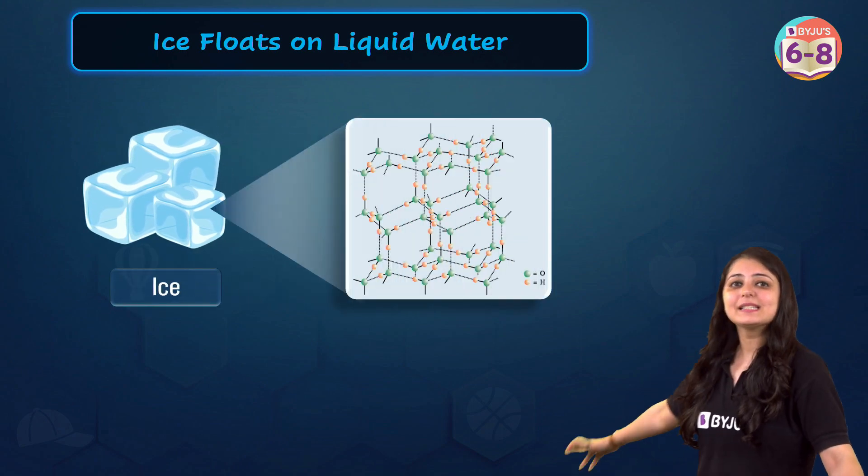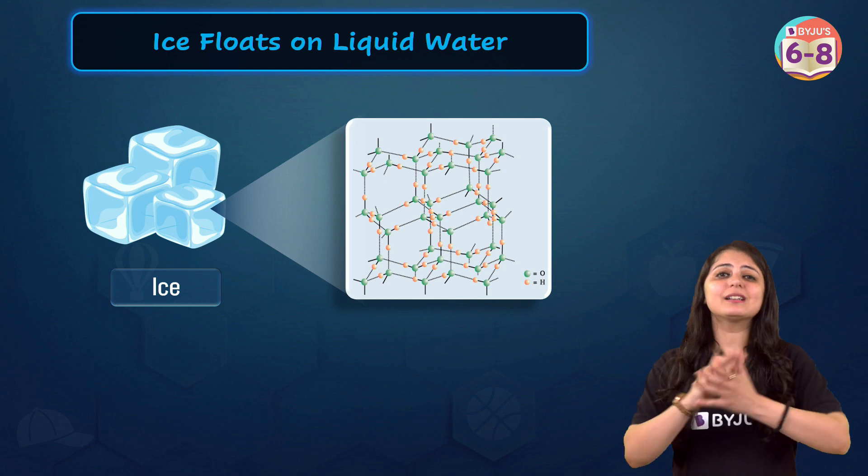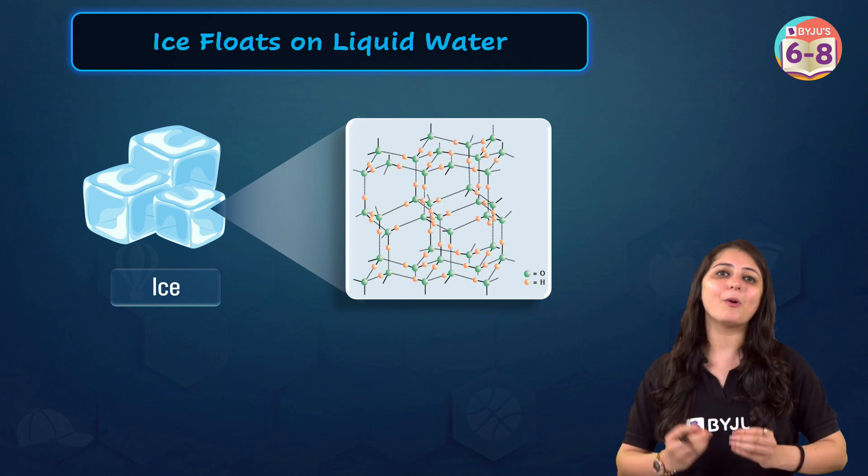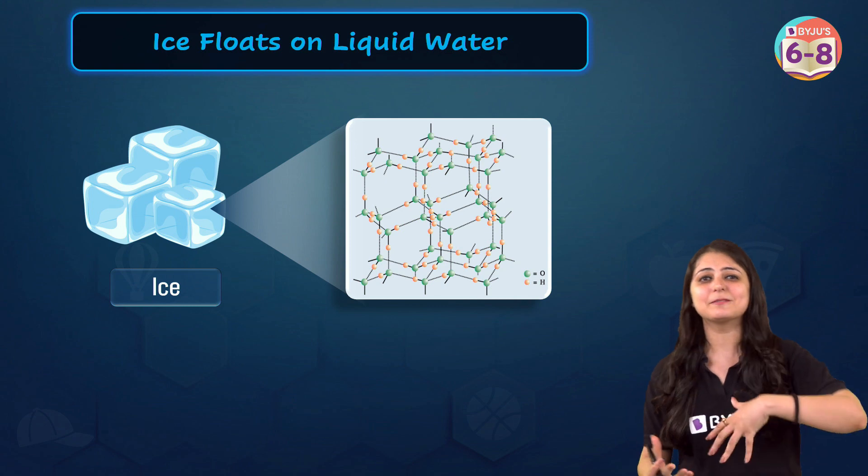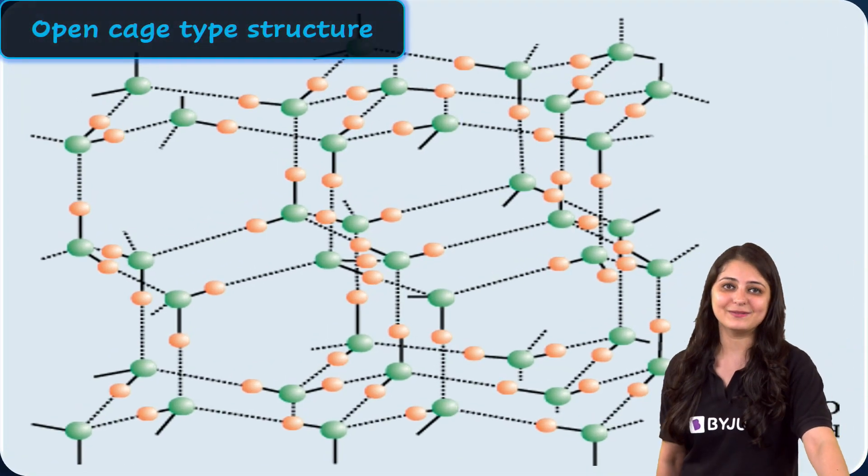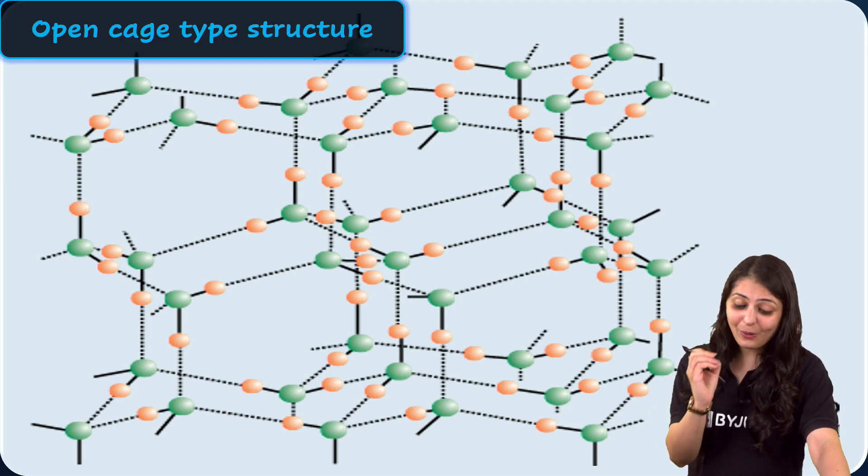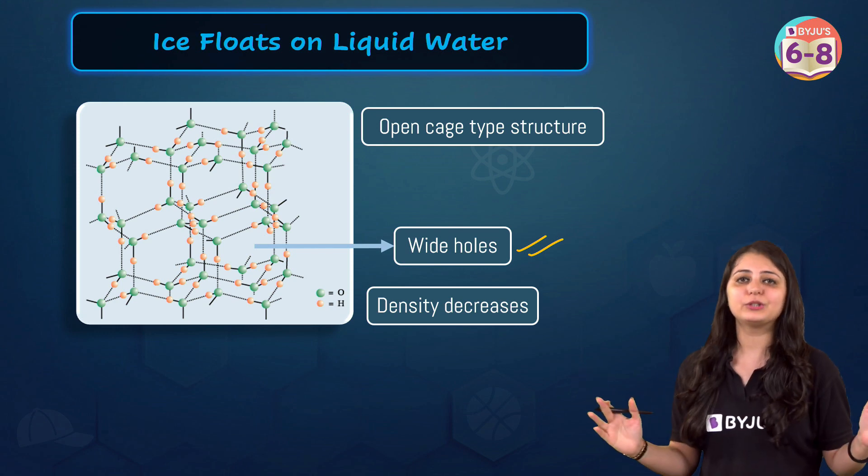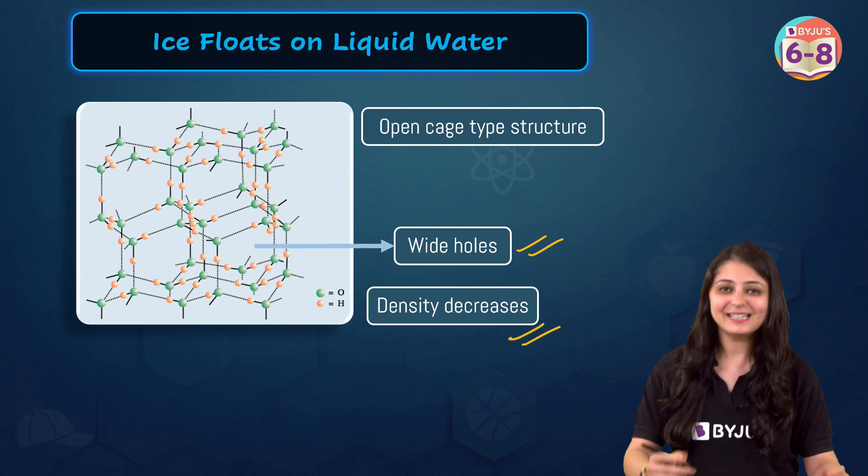Ice actually forms a cage-like structure with empty spaces. Water has a special kind of interaction between the molecules that most other substances don't have, and that is hydrogen bond. In a single drop of water, hydrogen bonds form extended networks between hundreds and thousands and millions and billions and trillions of molecules. And this is how beautifully it looks on the molecular level. Clearly, the hexagonal structure that you can see over here is less dense as it has a lot of vacant spaces. Look at these wide holes. A lot of vacant spaces are there. If any object is less dense, then of course that's going to float, isn't it? So, density decreases, so it will start to float.